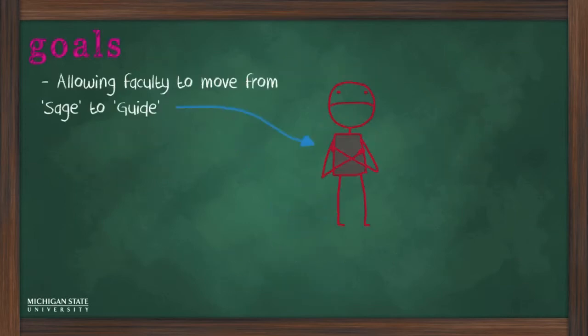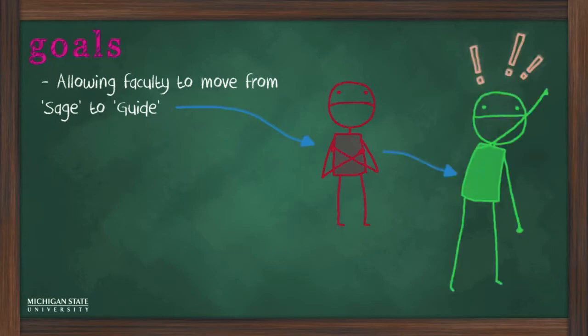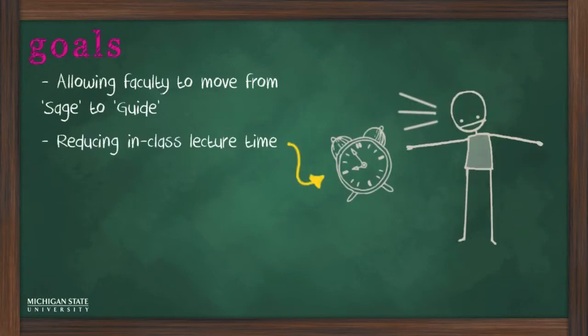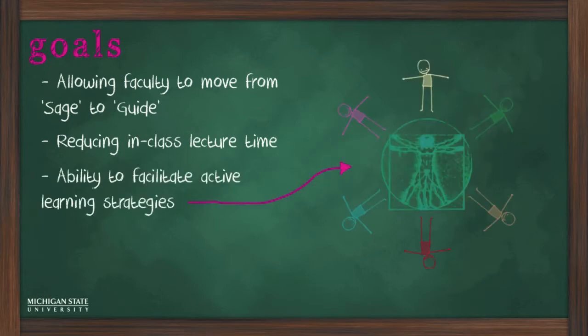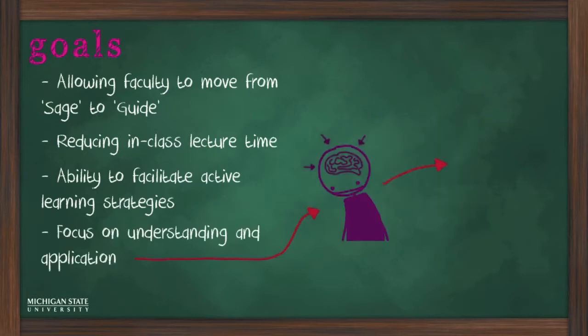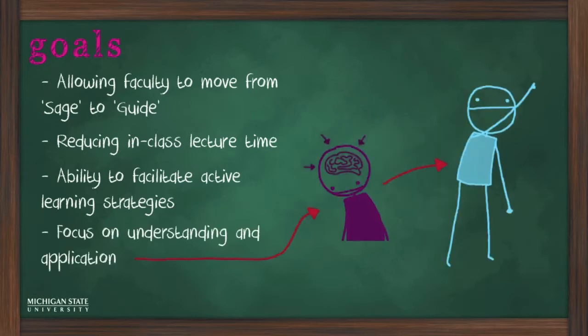Some of the goals of the flipped classroom model include finding an approach that would make it possible for faculty to move from sage to guide, reducing the amount of time spent in class on lecturing, opening up class time for the use of active learning strategies, and focusing more on understanding and application than on recall of facts, while not sacrificing presentation of the factual base.